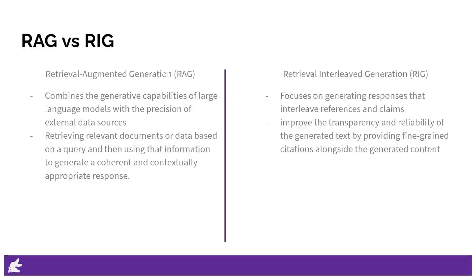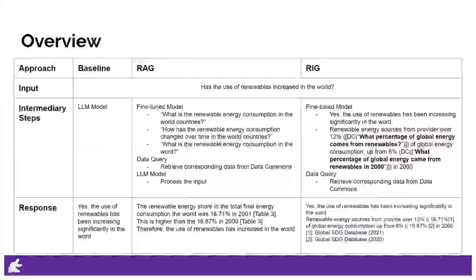Retrieval Interleaved Generation, on the other hand, focuses on generating responses that interleave references and claims. This method aims to improve the transparency and reliability of the generated text by providing fine-grained citations alongside the generated content. In RIG, the model generates text while simultaneously referencing the retrieved passages, which helps in grounding the generated content in specific sources. This interleaving of references allows users to trace back the information and verify the claims made by the model, enhancing trust in the AI's outputs.